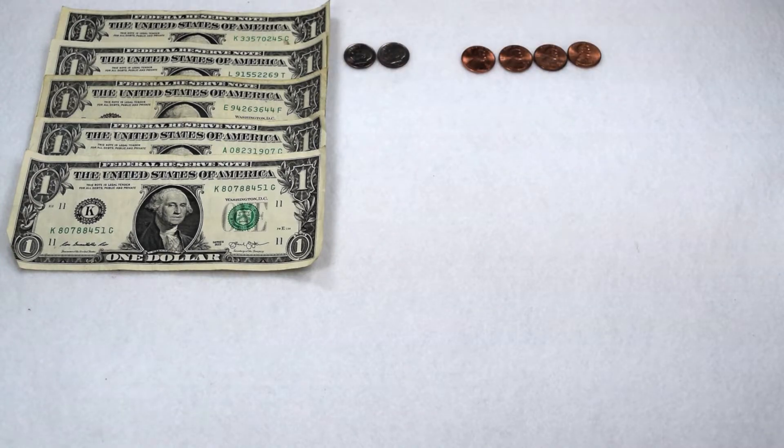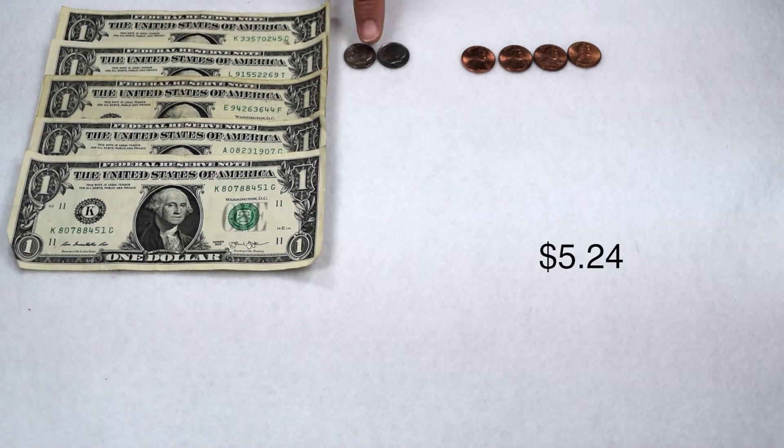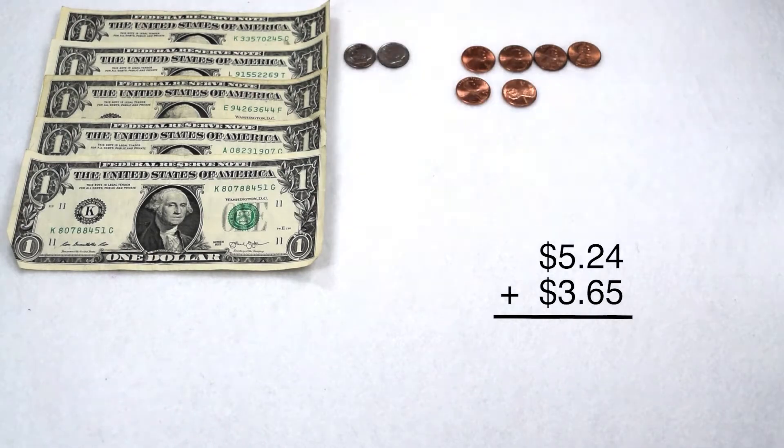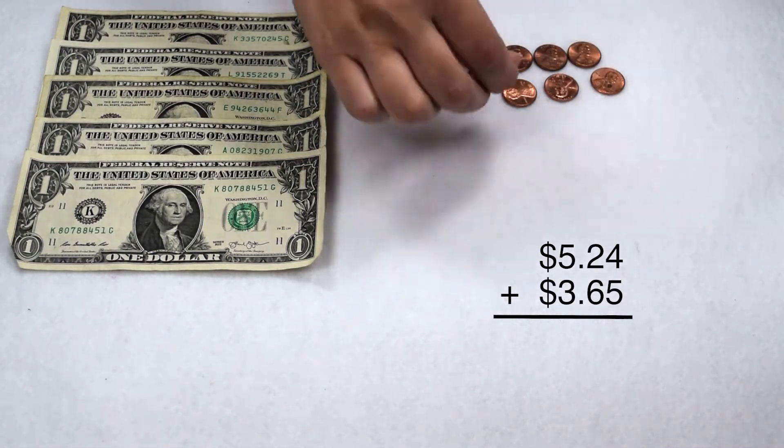We'll start with adding money since adding money is a part of adding decimals that most of us are familiar with. Here we have $5.24 and to that we're going to add $3.65. Let's start with our pennies. To my four pennies, I'm going to add five more to give me a total of nine pennies.